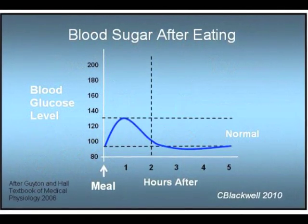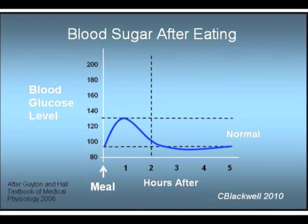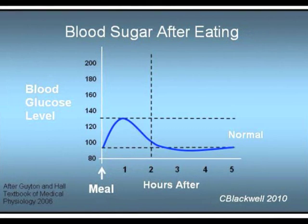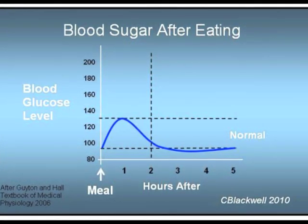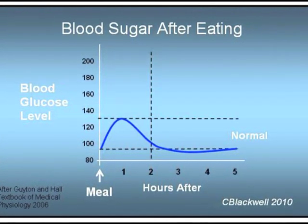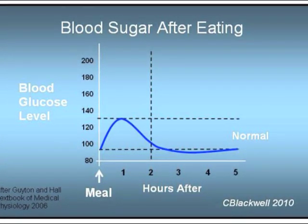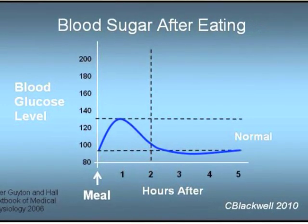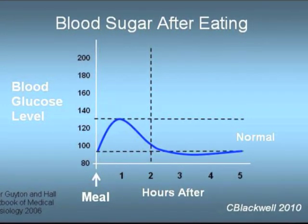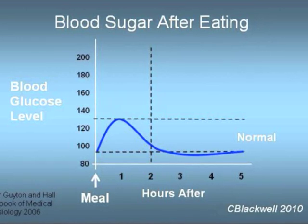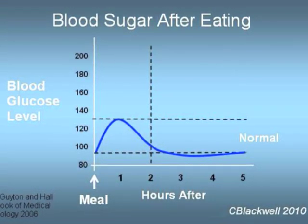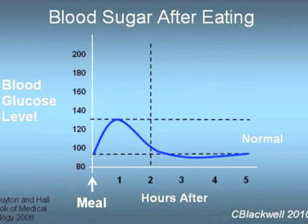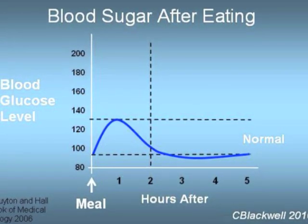To review how your body handles glucose, this slide shows how blood sugar behaves in a normal person after eating. We'll call the start of the graph as fasting, like in the morning before breakfast or between meals. A normal fasting blood sugar is around 90. After a meal, the blood sugar peaks at about an hour, and by two hours is back down near normal.